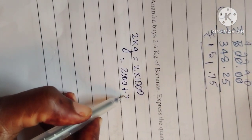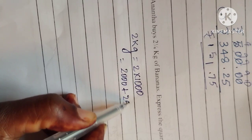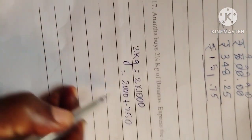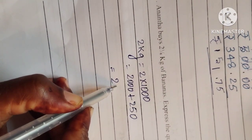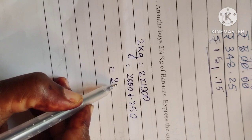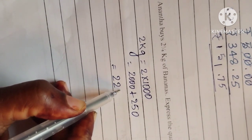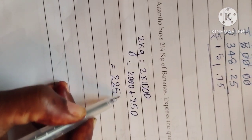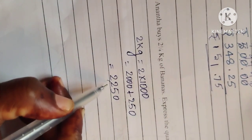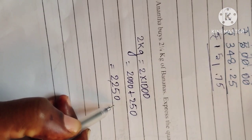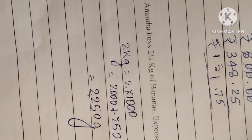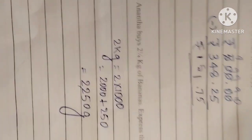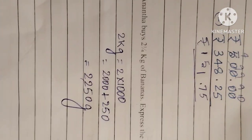They are also given 250 grams, which is one-quarter kg. Now add 2000 plus 250 grams, so 2 kg 250 grams equals 2250 grams.